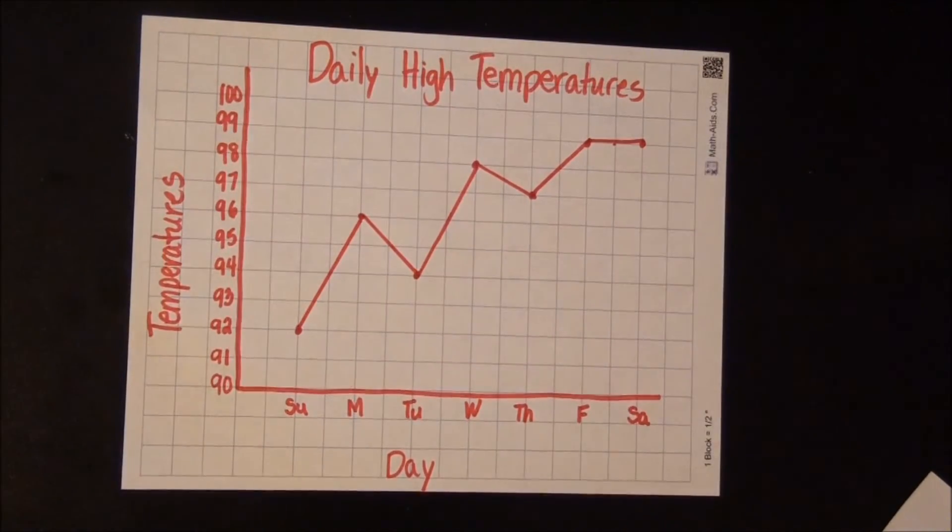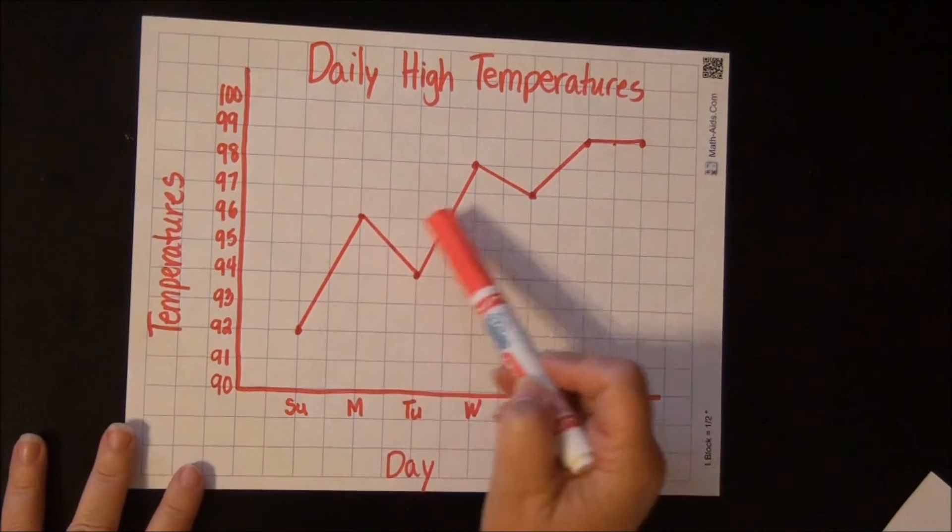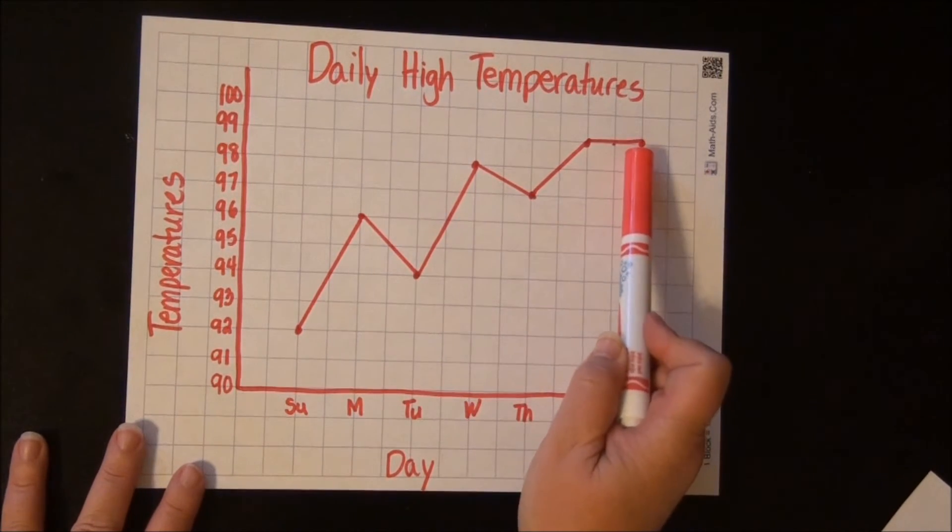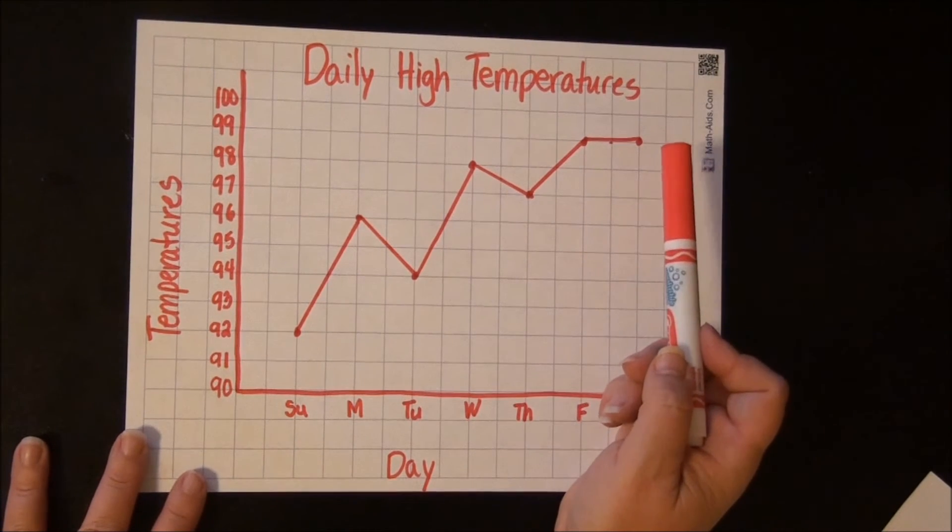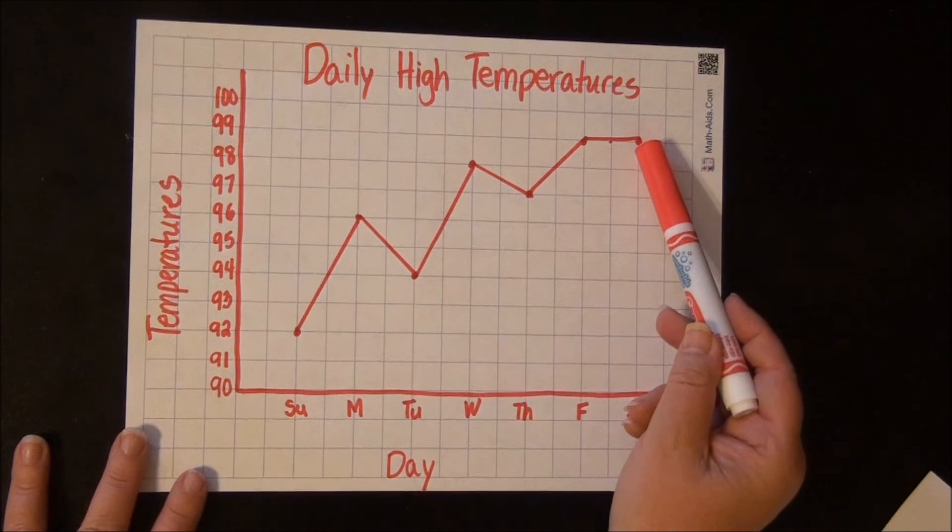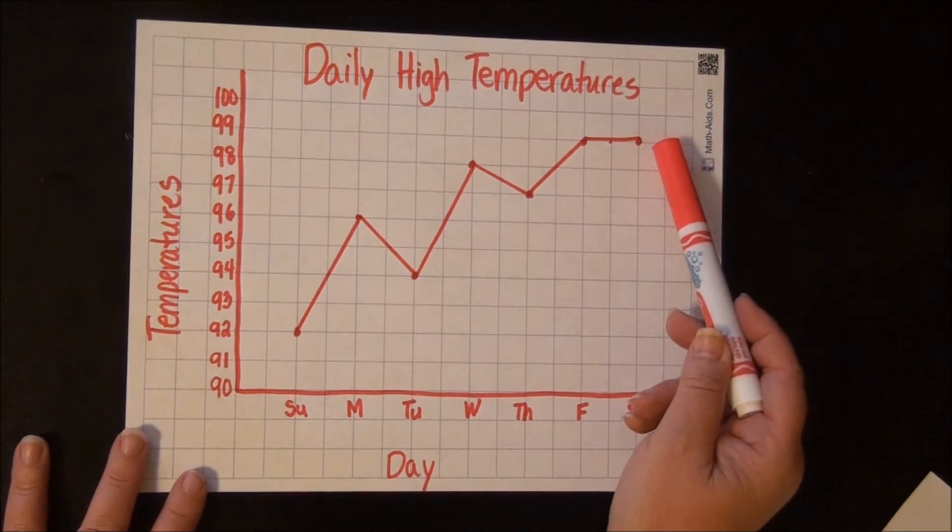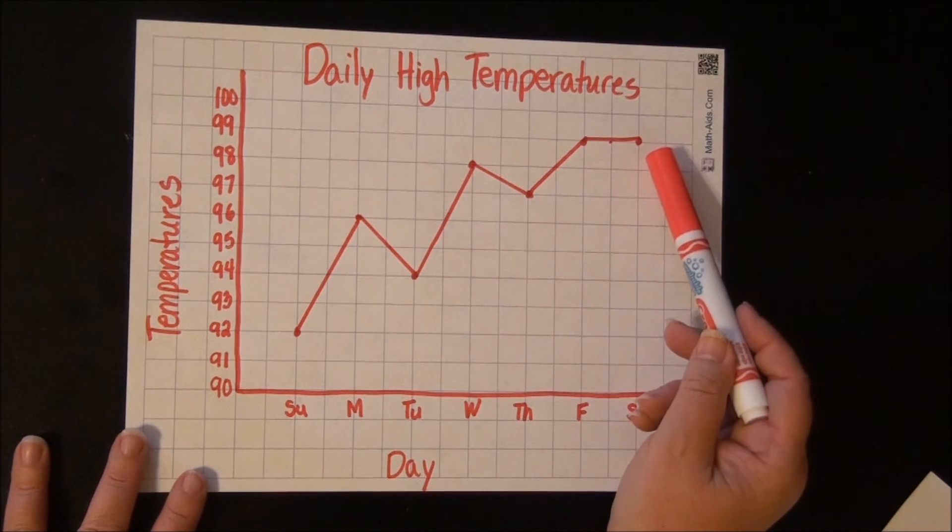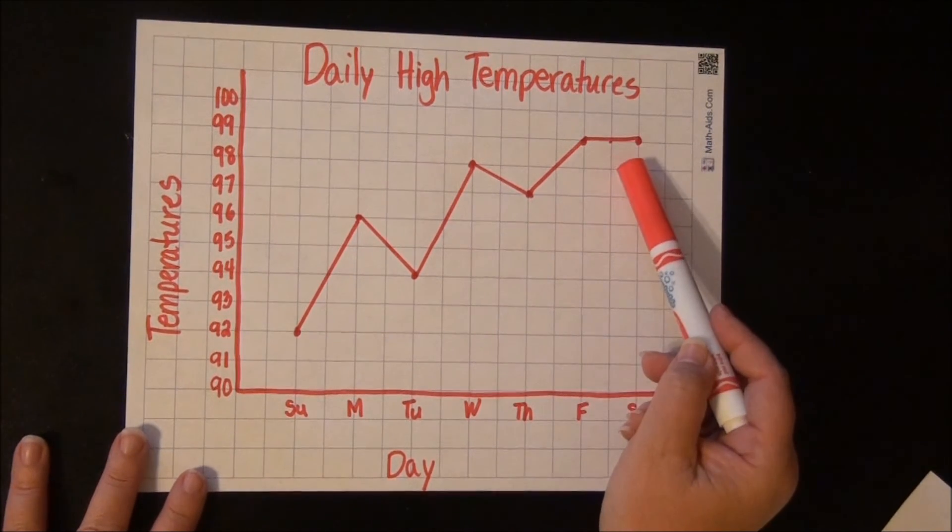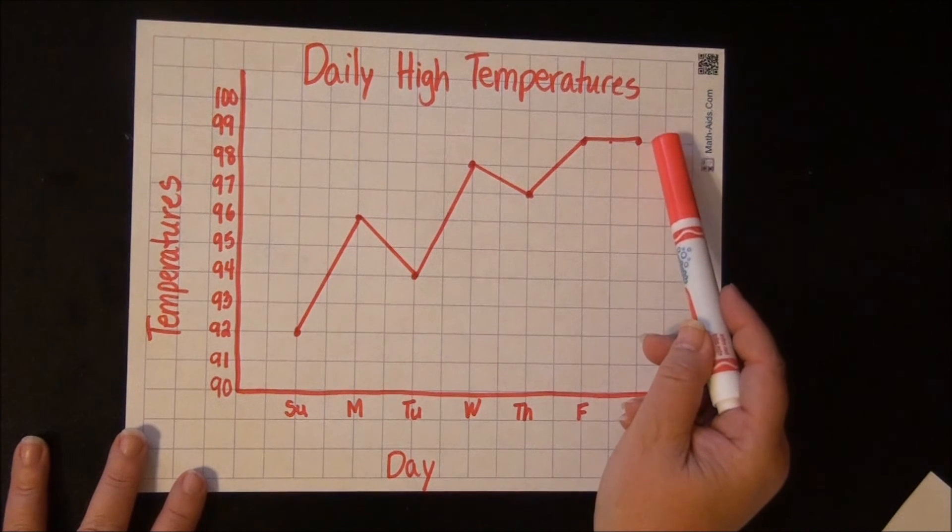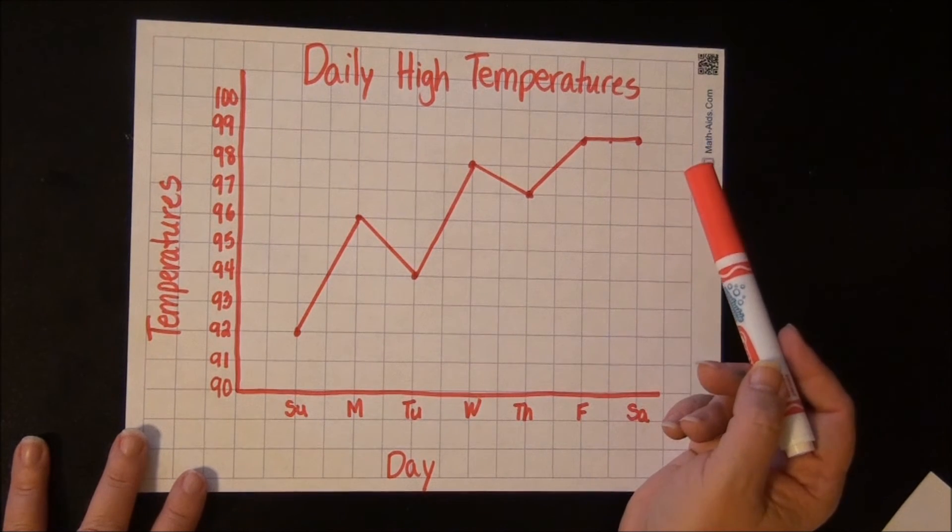Now you can see that the temperatures are gradually going up. So you could probably guess that these would be summer temperatures because summer temperatures are higher. If someone asked you, what do you think the temperature might be on Sunday next week? You could say, well, it's probably going to be around 99 degrees because it could go up to 100 or it could be 98. But the temperatures are gradually going up, so it looks like it could probably be around 99 degrees.